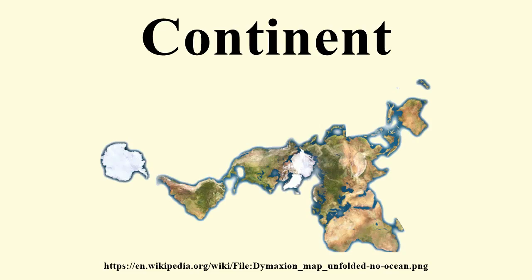Others divided the continents by isthmuses, calling the continents peninsulas. These latter geographers set the border between Europe and Asia at the isthmus between the Black Sea and the Caspian Sea, and the border between Asia and Africa at the isthmus between the Red Sea and the mouth of Lake Bardawil on the Mediterranean Sea. Through the Roman period and the Middle Ages, a few writers took the Isthmus of Suez as the boundary between Asia and Africa, but most writers continued to consider it the Nile or the western border of Egypt. In the Middle Ages, the world was usually portrayed on T-O maps, with the T representing the waters dividing the three continents.